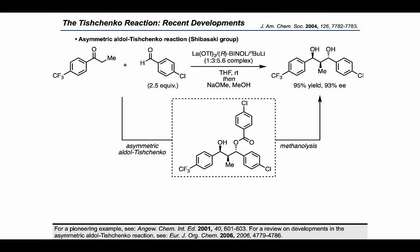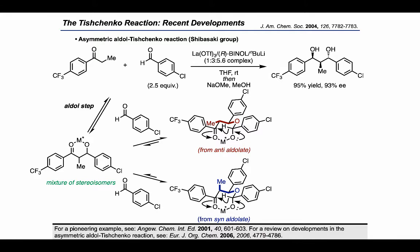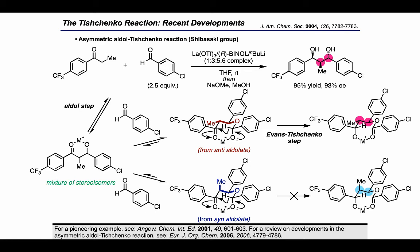Now let's look at the asymmetric aldol-Tyshenko reaction in more detail. It turns out that the initial aldol reaction is proceeding reversibly and non-selectively, giving all possible stereoisomers of the beta-hydroxyketone intermediate. In the next step, a hemiacetal is formed by reaction with another equivalent of the aldehyde, giving an anti-aldolate-derived hemiacetal and a syn-aldolate-derived hemiacetal. Observing that the anti-aldolate underwent the Evans-Tyshenko step much more quickly than the syn-aldolate, the authors identified the destabilizing nature of the axial methyl group in the syn-aldolate-derived hemiacetal transition state as the root cause for this rate difference. In effect, the authors proposed that their Evans-Tyshenko reaction may be acting as a kinetic funnel to allow selection between the intermediates at equilibrium.